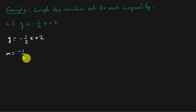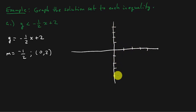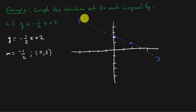This line has a slope of negative one over two and a y-intercept of zero, two. We can graph this using rise over run. We want to plot the y-intercept at (0, 2), then use rise over run — go down one unit and to the right two units — and draw our graph. Now, when you draw your graph, you have to draw it with a dashed line.